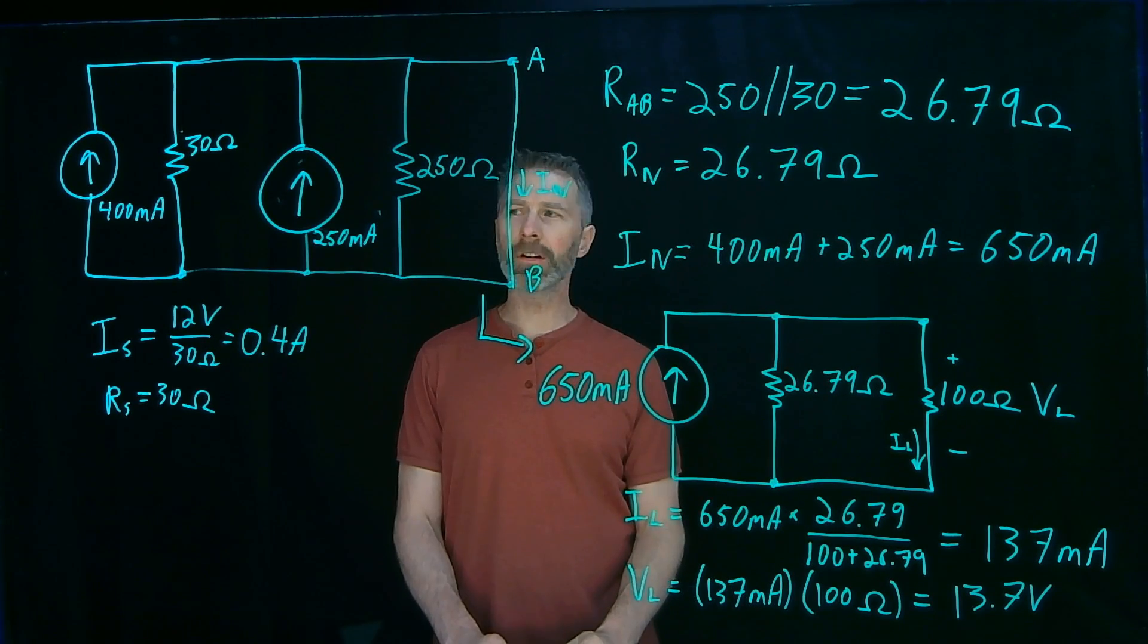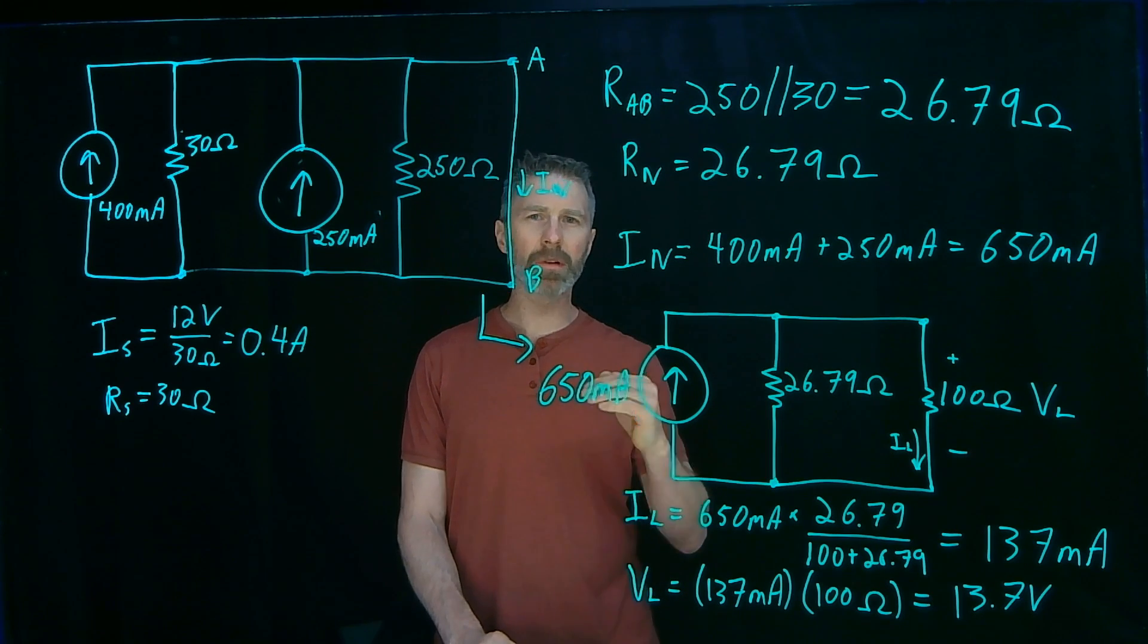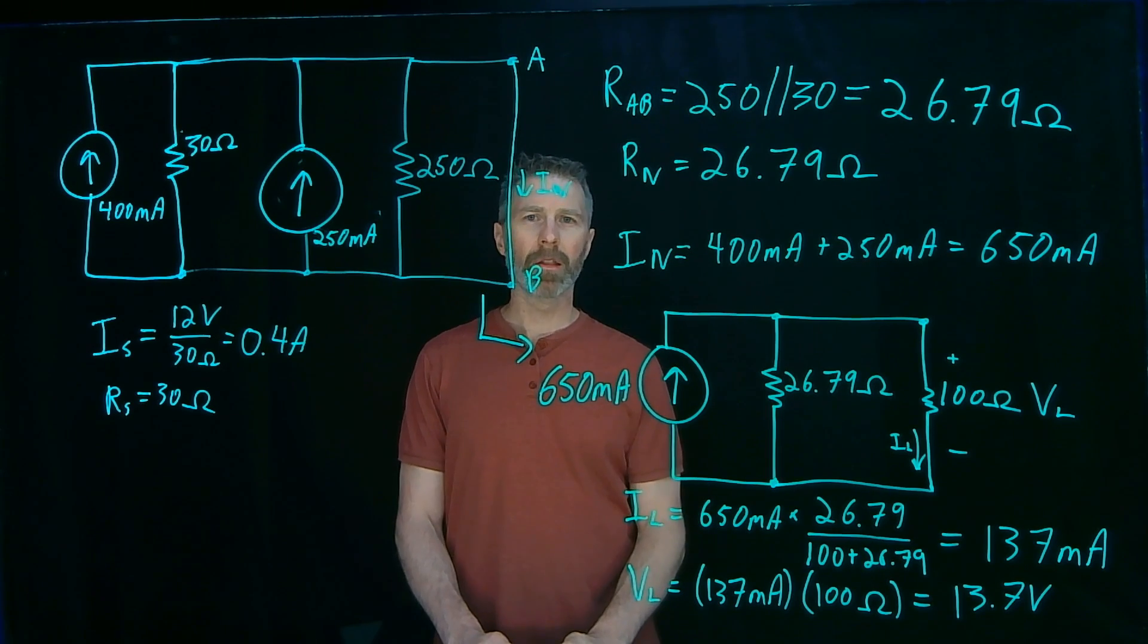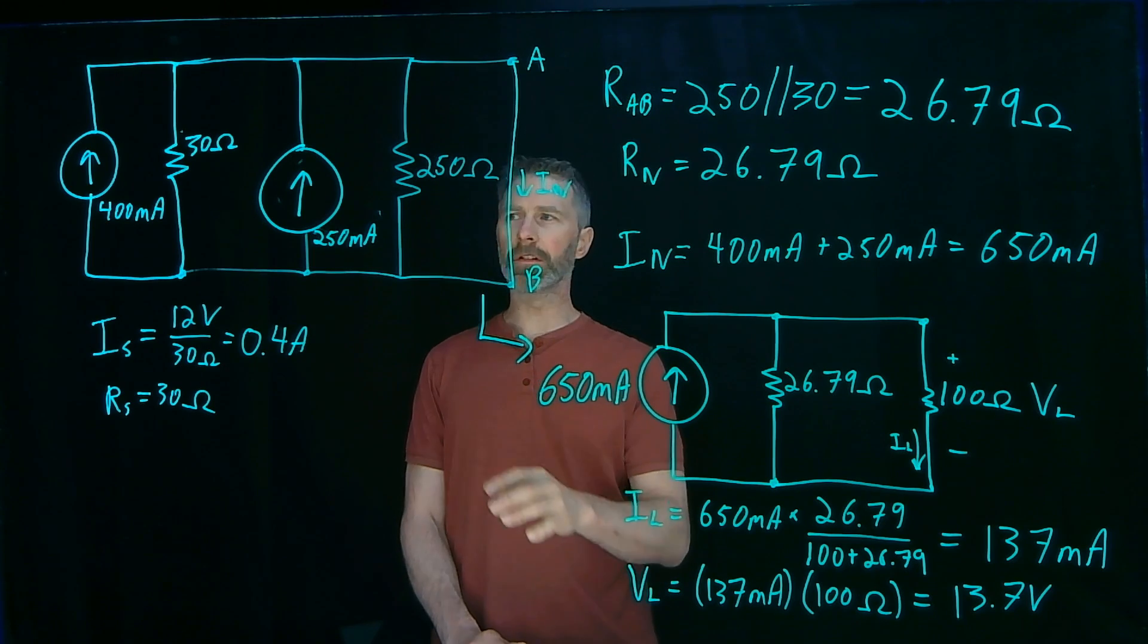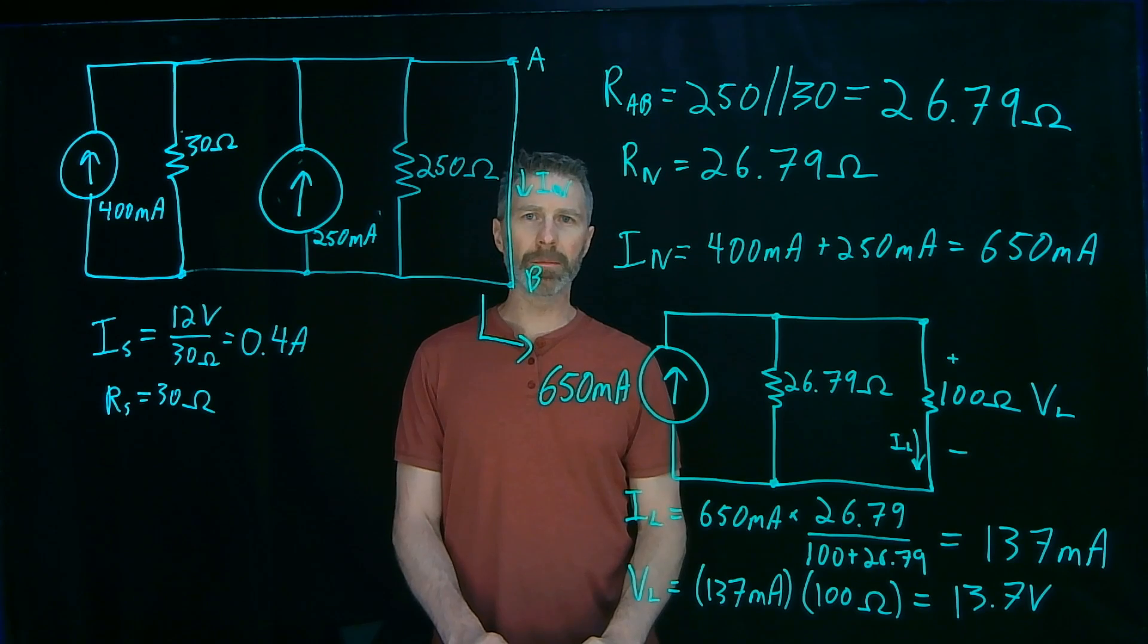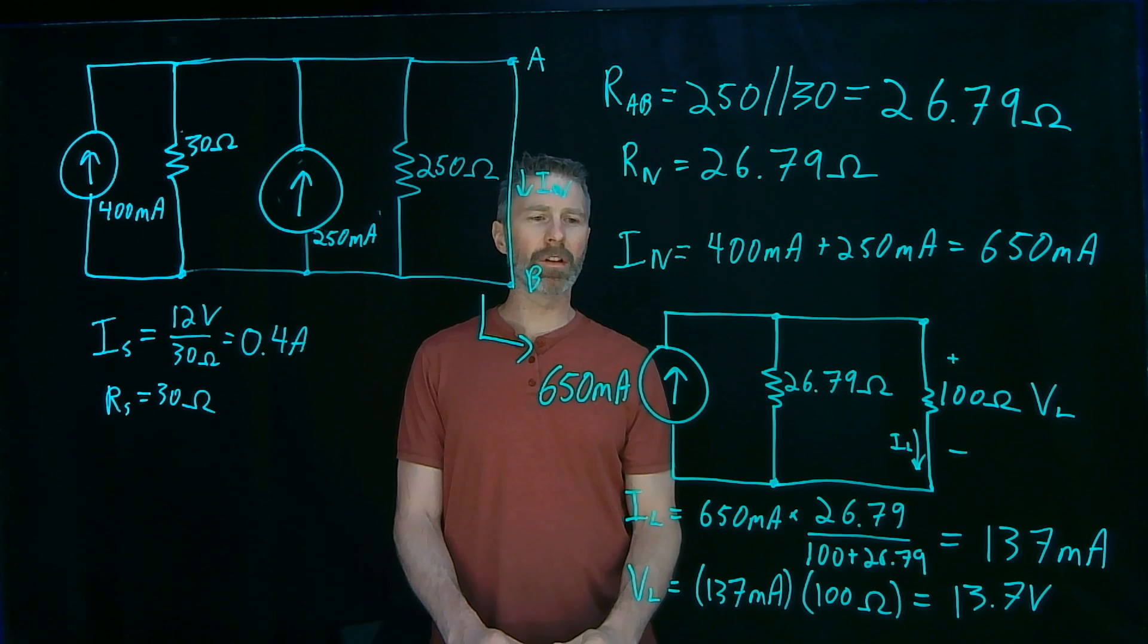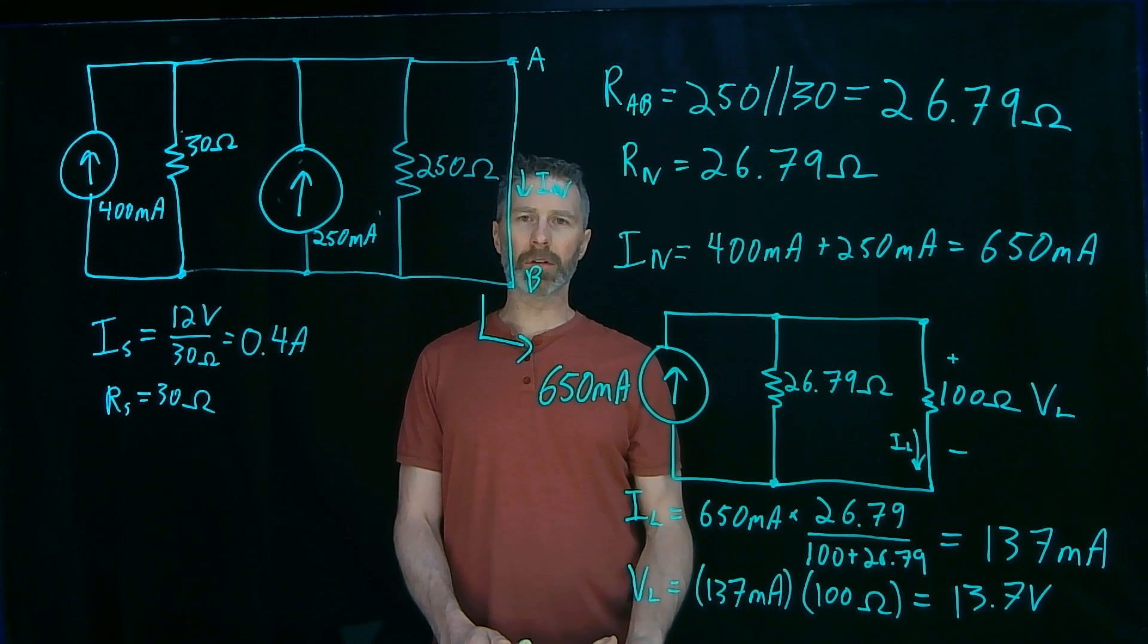So just like the Thevenin equivalent, the Norton equivalent is a fairly simple process to go through. There's a number of steps, but it's very algorithmic. Probably the most challenging part will be figuring out the current source value or the resistor value. There may be some complications there as well. But the analysis uses the circuit analysis tools you already know. Kirchhoff's voltage law, current law, Ohm's law, superposition.